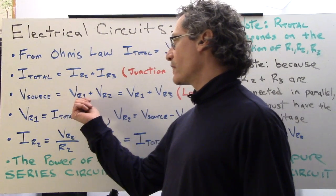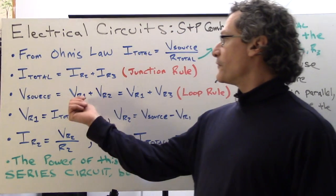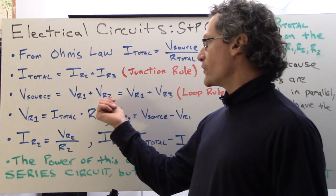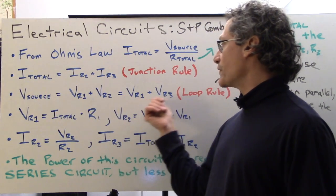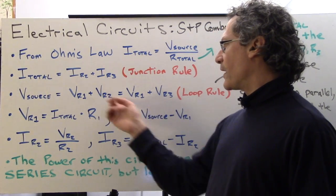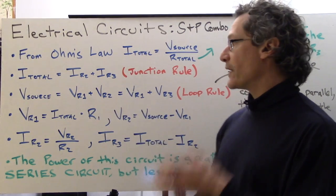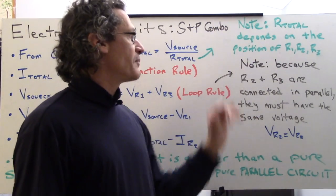The V source is from the loop rule: V R1 plus V R2, or it's V R1 plus V R3. Why can't you substitute V R2 for V R3? Well, that's because, again, they are in parallel with each other.